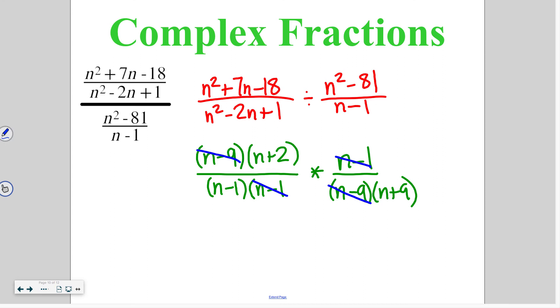Then we're multiplying. The only thing left up top is n plus 2. On the bottom, I get n minus 1 times n plus 9. Nothing else can be canceled out or simplified. So that is our final answer.